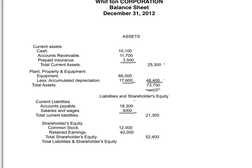In the shareholders' equity section, the first item is common stock — that is the amount the shareholders invested in the company by purchasing shares. The retained earnings comes from the retained earnings statement we completed earlier, which is $40,400. The total of the shareholders' equity section is $52,400, and the liabilities are $21,300.